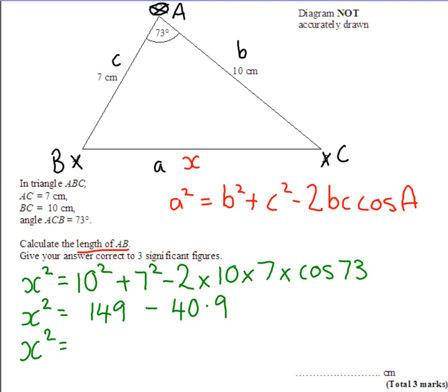So X squared equals 149 take away 40.9, which is 108.1. And then if I take the square root of 108.1, I get X is equal to 10.4 centimeters.